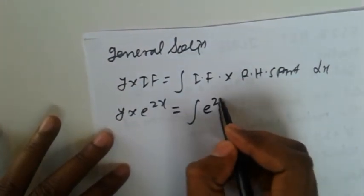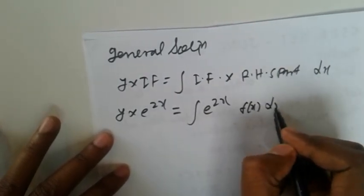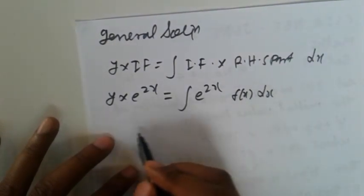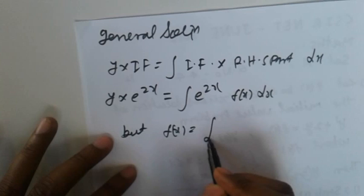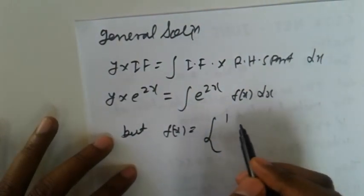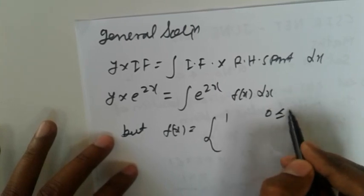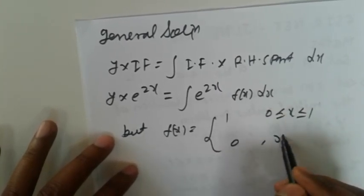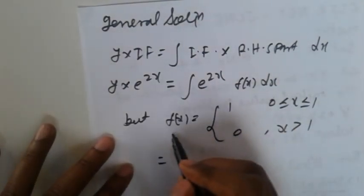But f(x) is given as a piecewise function: f(x) = 1 for 0 < x ≤ 1, and f(x) = 0 for x > 1.